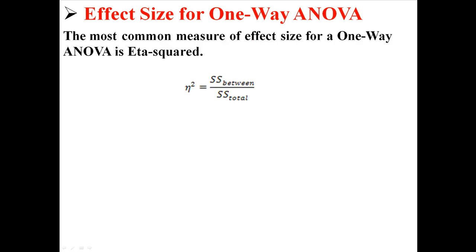When you're doing a one-way ANOVA, there are a few things you can do, but the most common measure of effect size is called eta squared. Eta squared is your sum of squares between divided by your sum of squares total.